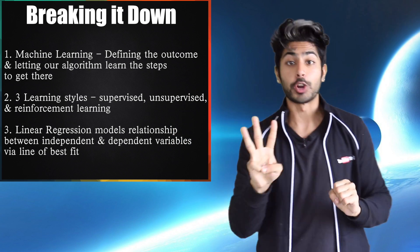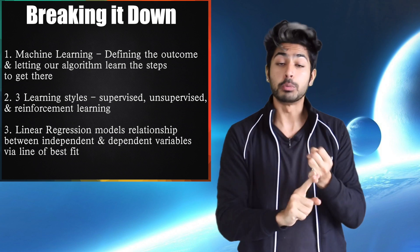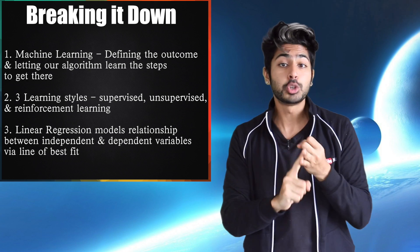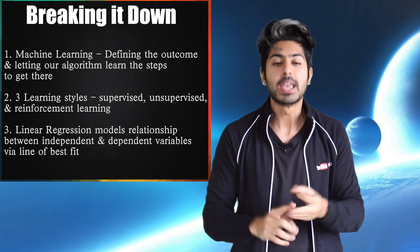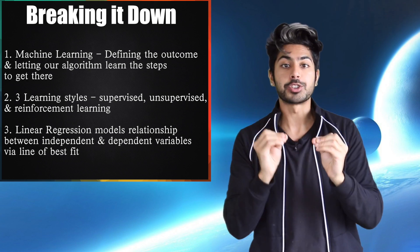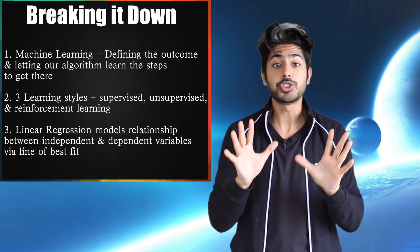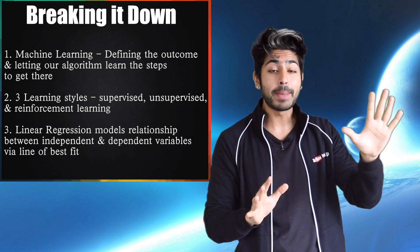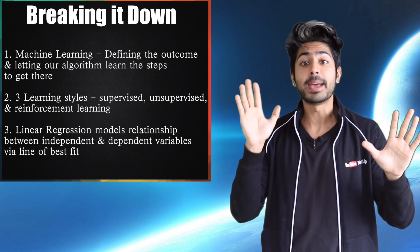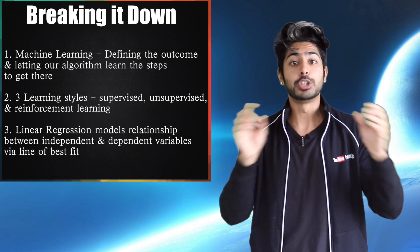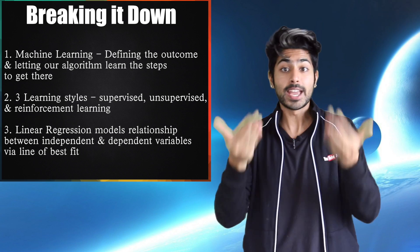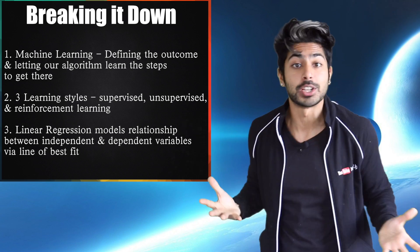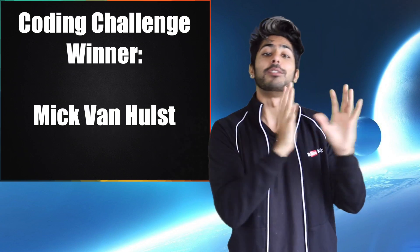There are three different learning styles: supervised, unsupervised, and reinforcement learning. Linear regression models the relationship between an independent and dependent variable to create the line of best fit, which we can then use to make predictions.